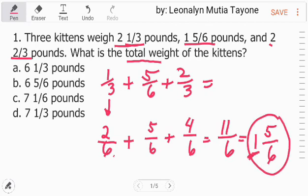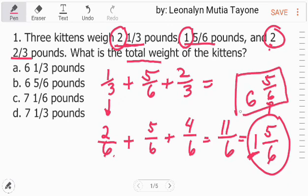Now, itong 1, the whole number, i-add natin sa 2, 1, at saka 2. 2 plus 1 plus 2 plus 1, and that is 6. So, 5 over 6. Ito na yung sagot. 6 and 5 over 6 pounds. Letter B.